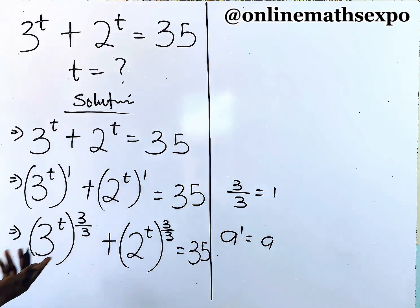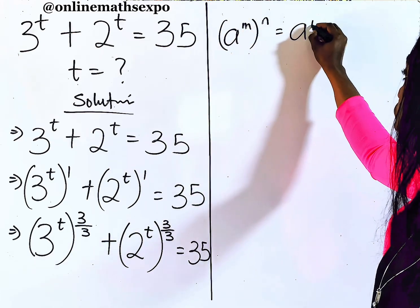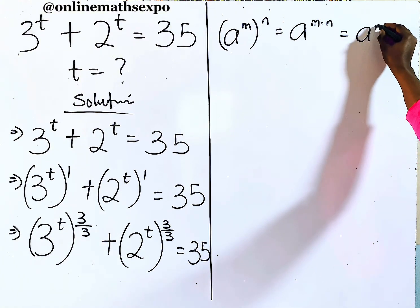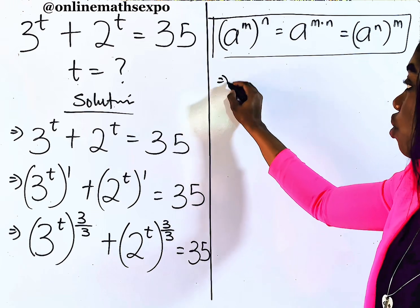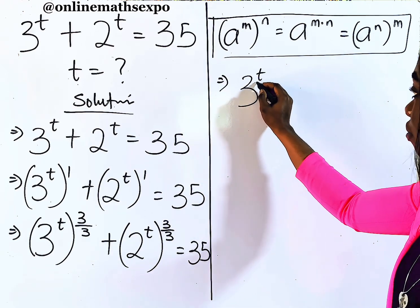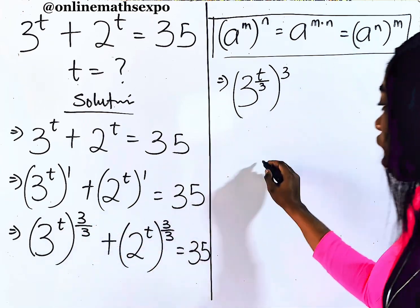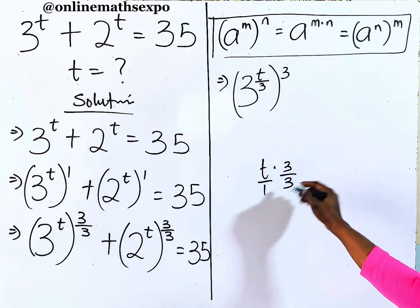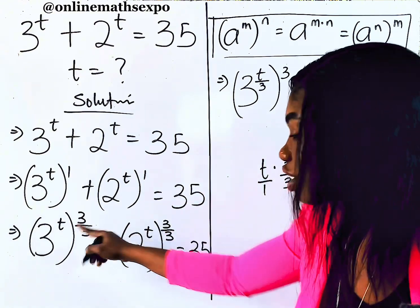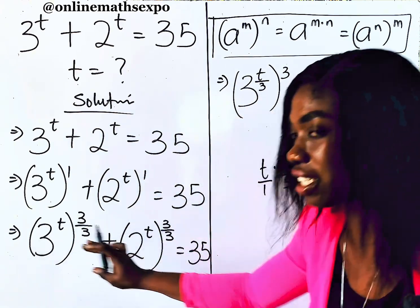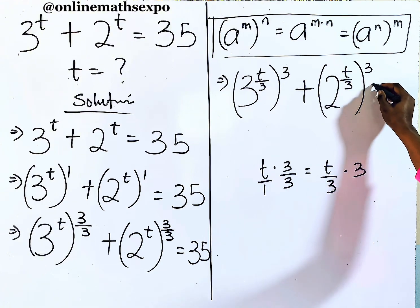Now we apply the rule: for every a to the power of m raised to the power of n, it equals a to the power of m times n. Applying this rule, we get 3 to the power of T divided by 3, all raised to the power of 3, plus 2 to the power of T divided by 3, all raised to the power of 3, equal to 35. This is because T times 3/3 gives back T, so nothing has changed.